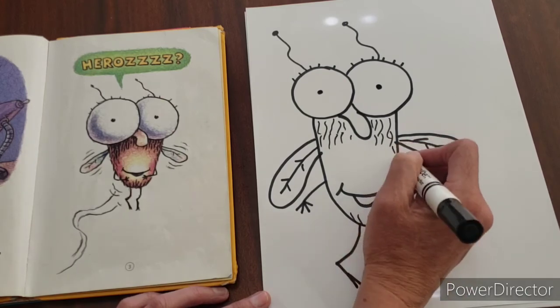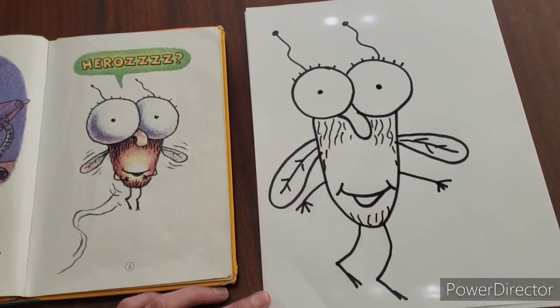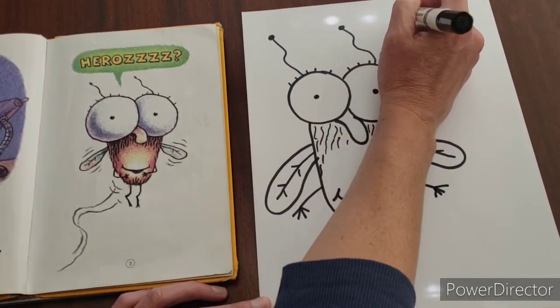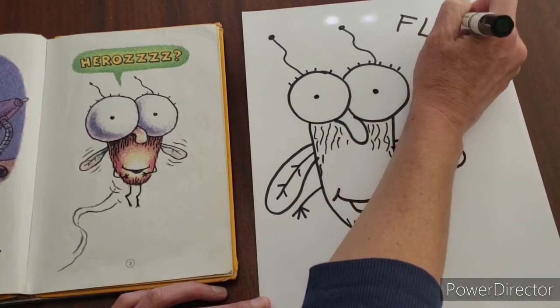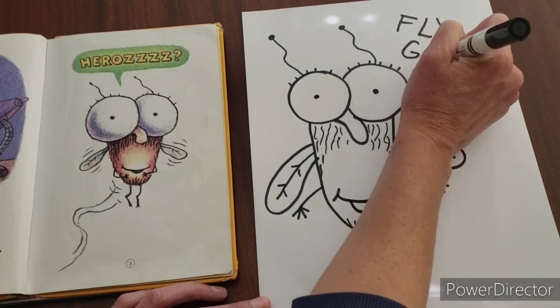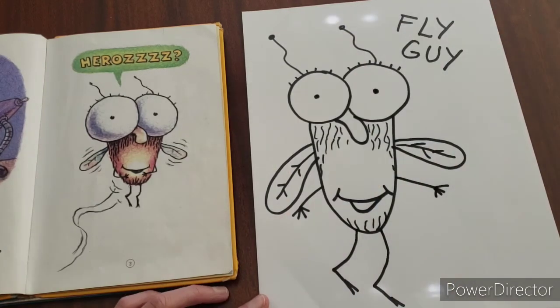All right, and then you're done. You've got your Fly Guy. You can kind of go back and add some more details if you want. You can make them flying around. So that is Fly Guy. Have fun drawing.